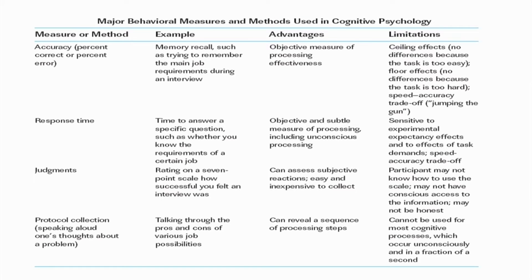The third method is the judgment method. Here, people are given a judgment scale — typically 7-point, 8-point, or 9-point scales — to rate how they are processing a particular item. It is very inexpensive to collect and accesses subjects' reactions to a particular cognitive process. For example, asking 'how are you feeling right now?' and having people respond on a 7-point scale across several questions. The problem with this method is that subjects are not always aware of how to use the scale properly.